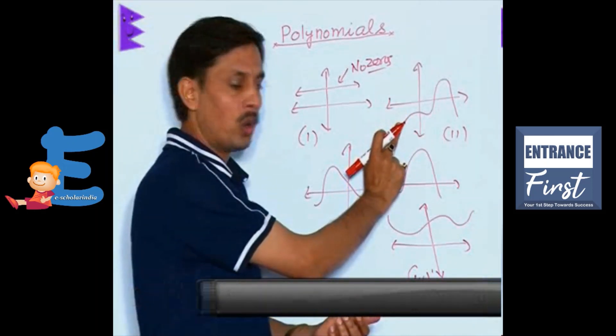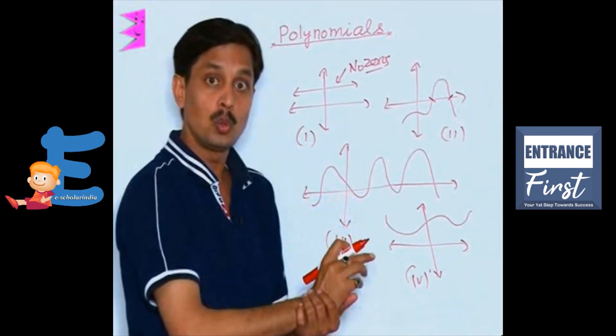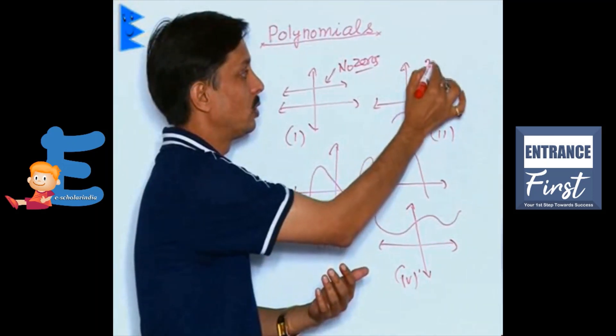Here you are noticing that this graph is cutting our x-axis at two places. So, it has how many zeros? It has two zeros.